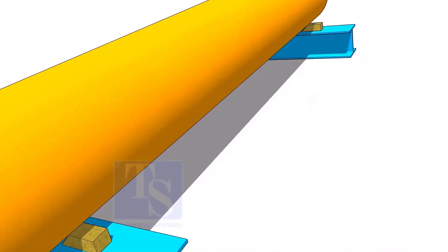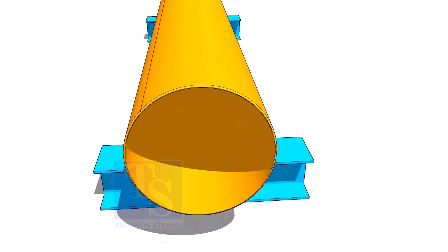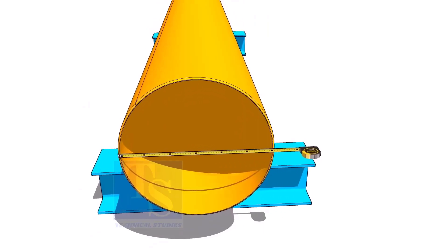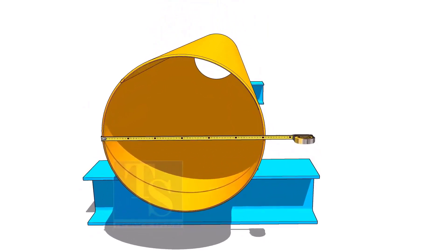Check the diameter of the pipe. If the thickness of the pipe is thin or the diameter is large, sometimes the pipe may be in an oval shape.